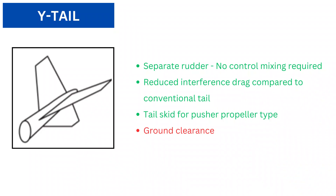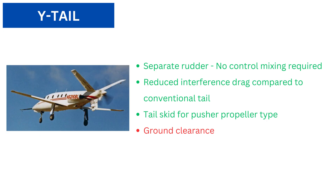Y-tail: This is similar to a V-tail, but the dihedral angle is lesser, and a third surface is added below the V-tail. This third surface contains the rudder, whereas the V-surfaces provide pitch control, so there is no need for mixing of controls. There is still reduced interference drag as compared to a conventional tail. For a pusher aircraft, the vertical tail can also act as a tail skid to protect the propeller. Clearance during takeoff and landing can still be a problem for this type.